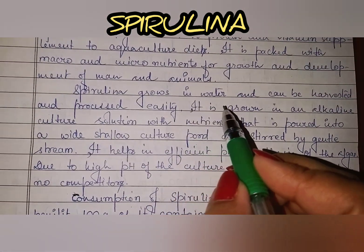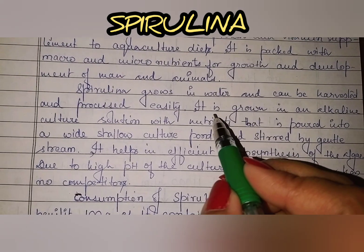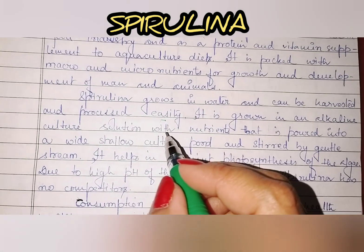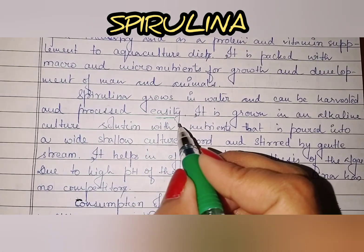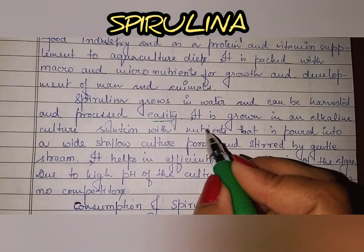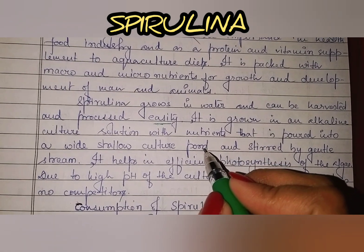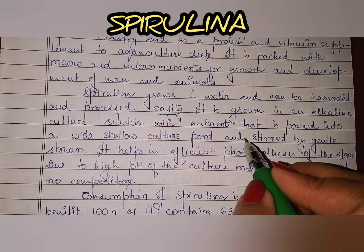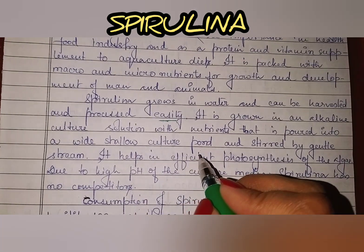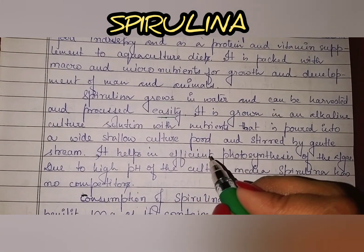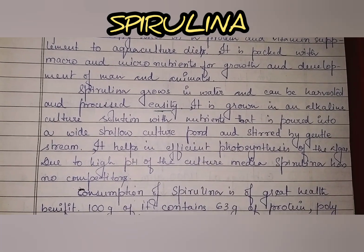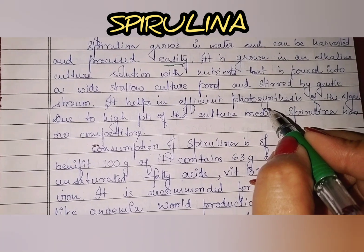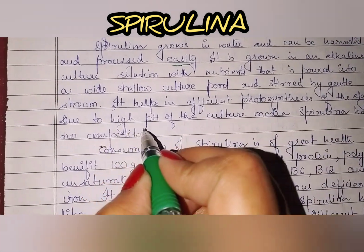Spirulina grows in water and can be harvested and processed easily. It is grown in an alkaline culture solution with nutrients that is poured into a wide, shallow culture pond and stirred by gentle stream. This helps in efficient photosynthesis of the algae due to the high pH of the alkaline medium.